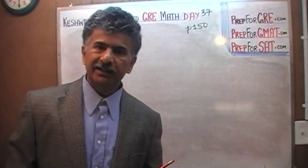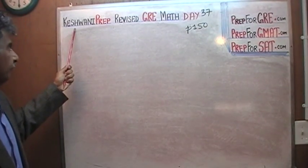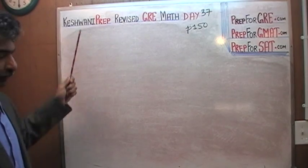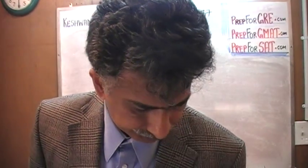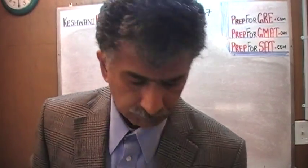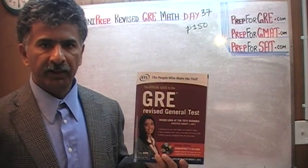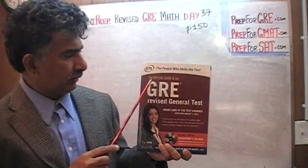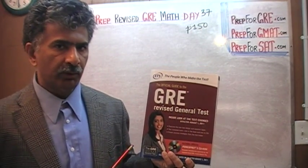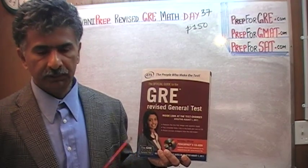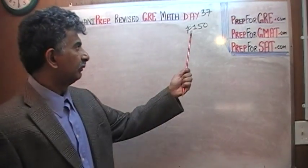Hello. My name is Keswani — that's K-E-S-H-W-A-N-I. We are here because we want to prepare for the math portion of the GRE. We have been solving math problems out of this book, the Official Guide to the GRE, the Revised General Test. If you do not own this book already, purchase one immediately. The problem I am about to solve is on page number 150.